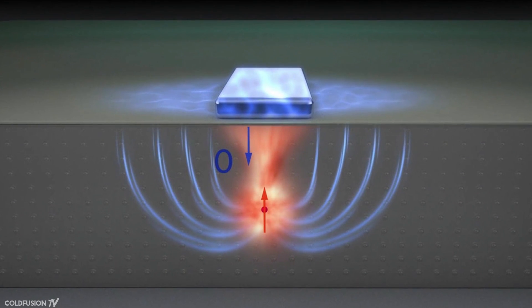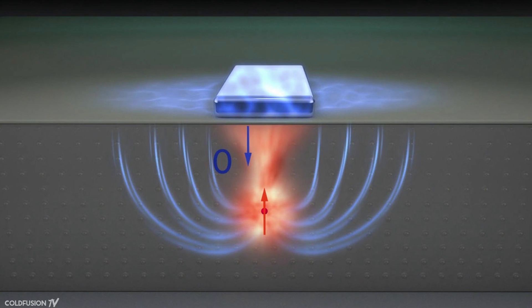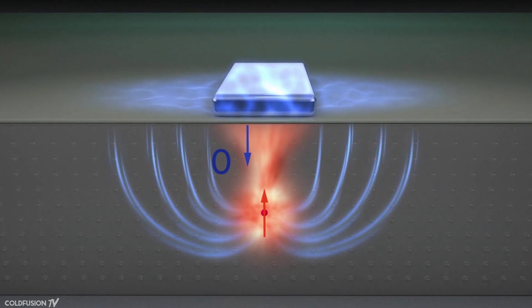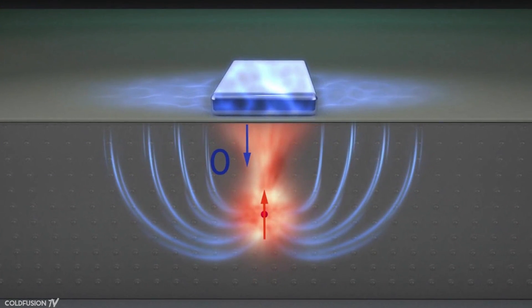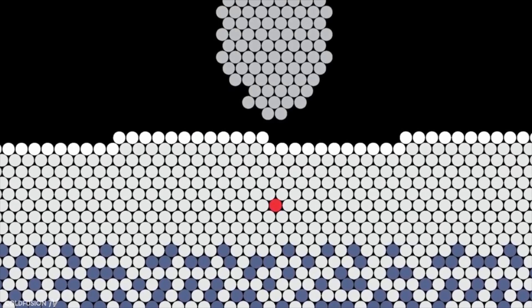Right now, we can only achieve a quantum superposition for a tiny fraction of a second. Not long enough to carry out a useful algorithm. Mastering this fragile quantum state still remains one of the biggest challenges for engineers and scientists to build a practical quantum computer. So that brings us to the next and final point. How do you actually build these things?